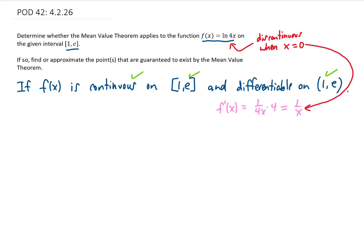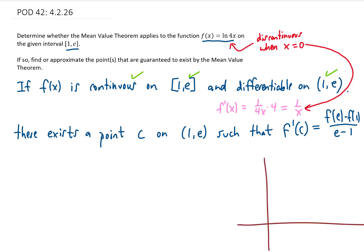Now the conclusion of the Mean Value Theorem says this: There exists some point x equals c on the interval from 1 to e such that the derivative of this function evaluated at c takes on the same value as the average rate of change of the function on that interval. If I'm going to do a really quick explanation of this,